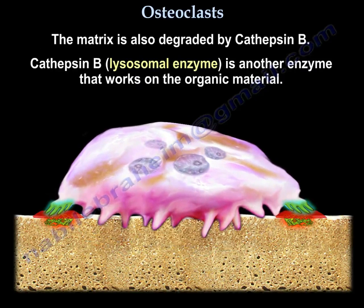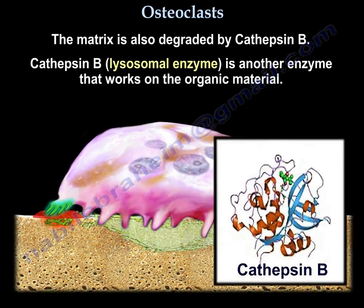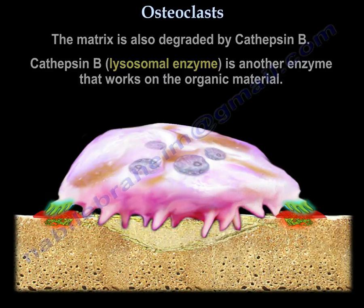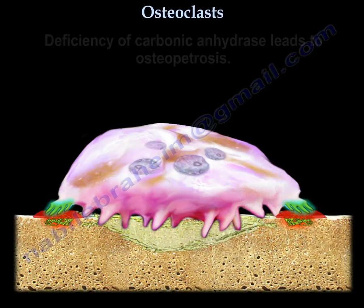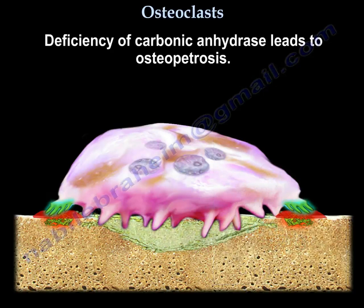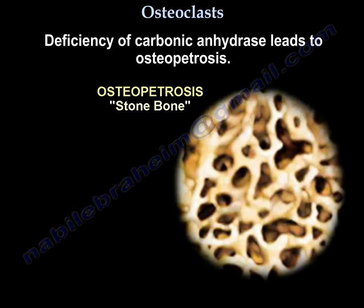The matrix is also degraded by Cathepsin B, another enzyme that works on the organic material — it is a lysosomal enzyme. Deficiency of carbonic anhydrase leads to osteopetrosis.